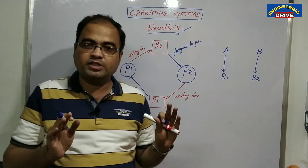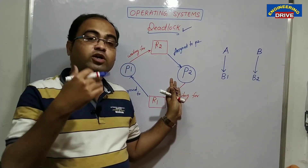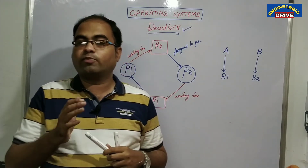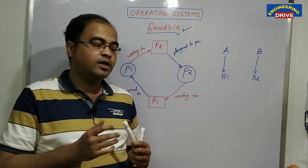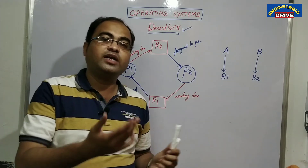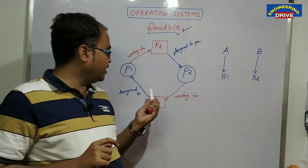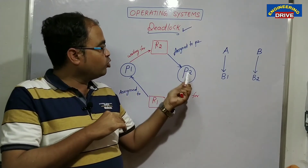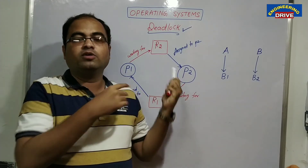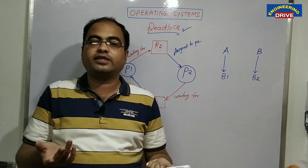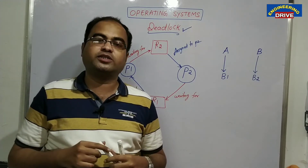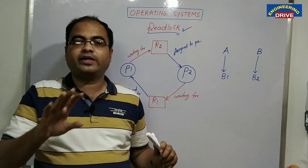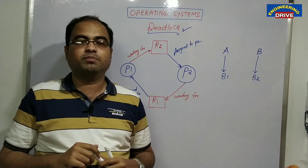A deadlock is a situation in which two or more processes are waiting for a shared resource — here R1 and R2 are shared resources — and neither of them are willing to release their own resources. Here P1 is not willing to release R1, and P2 is not willing to release R2, which means other processes will not get the other resources. This situation is known as deadlock. If you understand this diagram, you can explain deadlock in a very simple way.